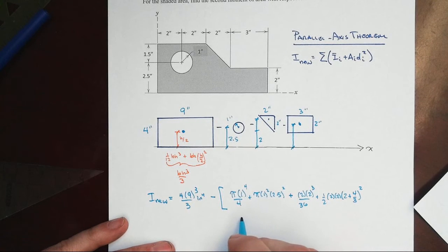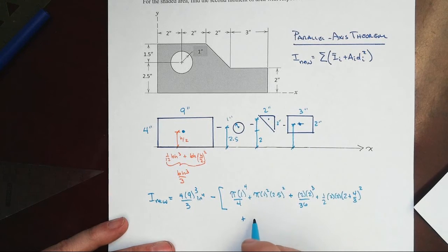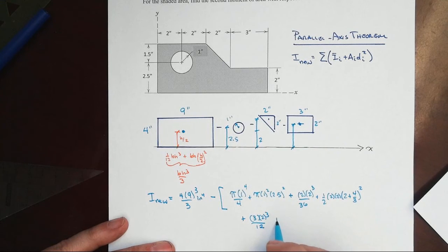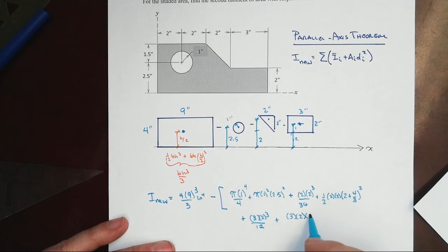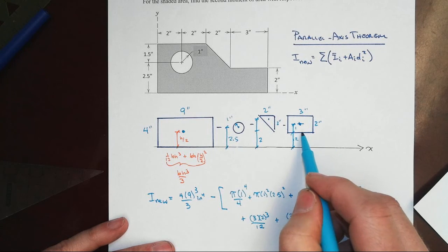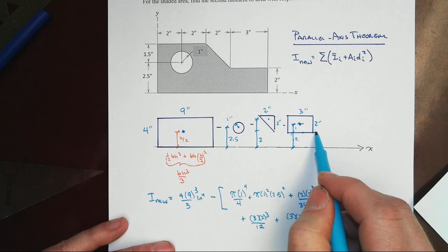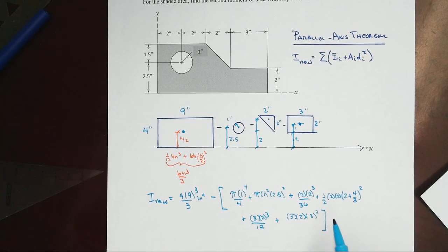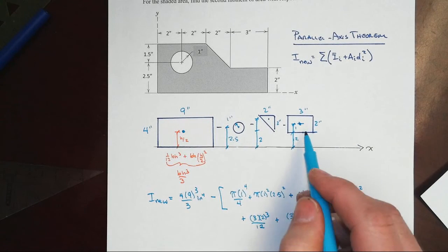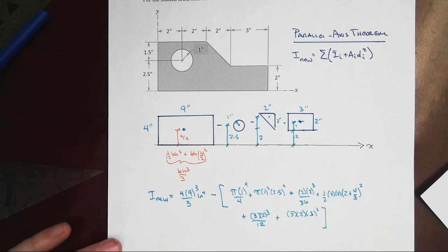Then we have the small rectangle: (1/12)bh³, so 3 times 2³ over 12. Then we have to move it — 3 times 2 is the area, and the distance we're moving it is 2 plus 1, or 3, squared. You might ask why we didn't use bh³/3 in this case — that's because that would have been the wrong axis, that base of that rectangle up there. We can't just use bh³/3 and then add another d² term because it's not linear. We have to do this properly from the centroid of the little rectangle all the way down to the new axis.